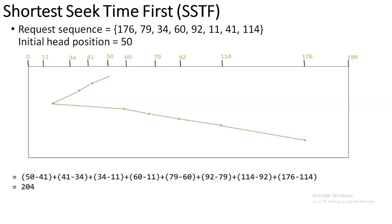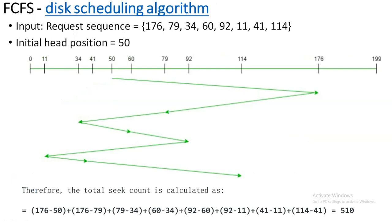Starting with 50, the seek count is: 50 minus 41, plus 41 minus 34, plus 34 minus 11, plus 60 minus 11, and similarly you sum up everything to get the total seek time. In this video we saw First Come First Serve scheduling and Shortest Seek Time First. In the next video we will see about Scan, C-Scan, and Look scheduling algorithms. Thank you.